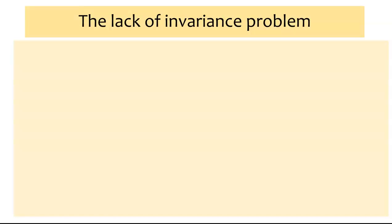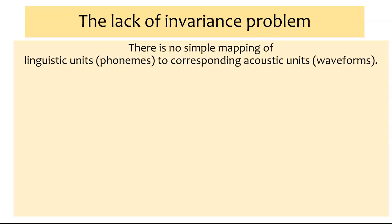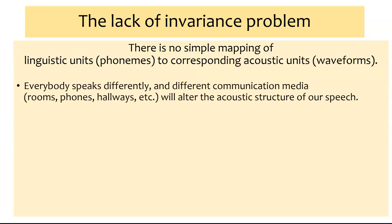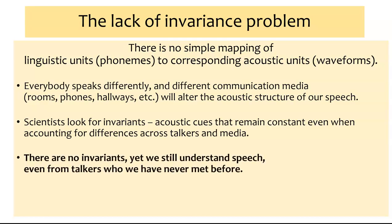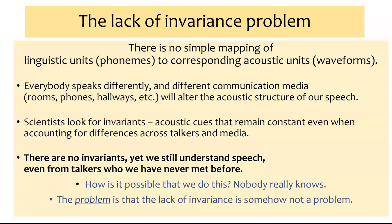This brings us to what we call the lack of invariance problem. The problem is that there's no simple mapping of phonemes to corresponding acoustic units or waveforms, because everyone speaks differently. Depending on the environment — the specific room, whether you're on a phone or in a hallway — there are lots of contributors to acoustic structure. As speech scientists, we can look for invariant cues — cues that are always there regardless of room or talker. Unfortunately, there are no invariant cues. This would make speech perception seem like a very difficult process, yet it seems easy and accessible even when listening to a talker we've never heard before. Nobody really knows how it's possible. The lack of invariance problem is not actually a problem in practice — we just don't know why.